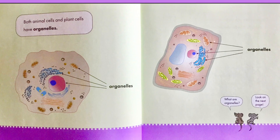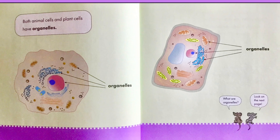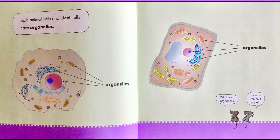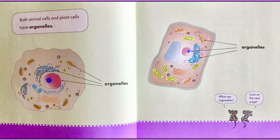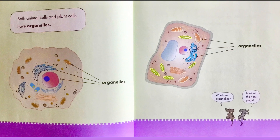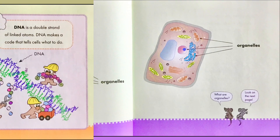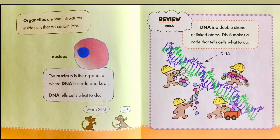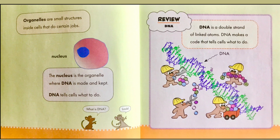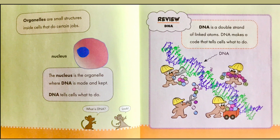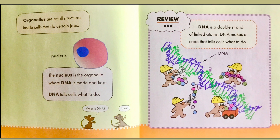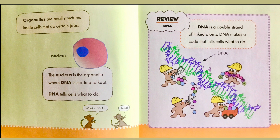Both animal cells and plant cells have organelles. You can see the organelles in both the circular and rectangular cells — those arrows are pointing to the organelles. Organelles are small structures inside cells that do certain jobs. That smaller circle in the cell is the nucleus — the organelle where DNA is made and kept.